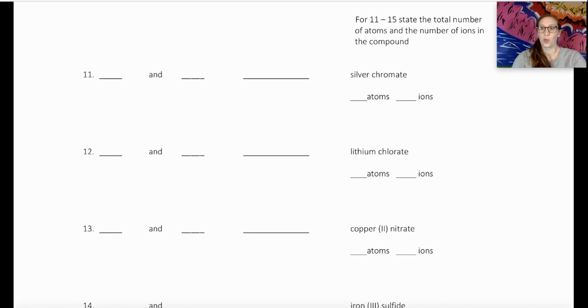Hey, it's Mrs. Kat, and I'm here with one more look at Worksheet 2 in Unit 6. Now we're going to look at the second part of this. So you've done numbers 1 through 10, you've now taken a little look at how to name and write formulas for compounds that are ionic.